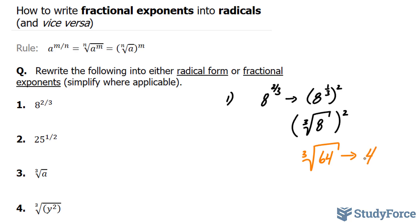Let's move on to question 2. In question 2, we have 25 to the power of half. Now, this half means the second root of 25, or in other words, the square root of 25. So another way to write this in radical form is the square root of 25.